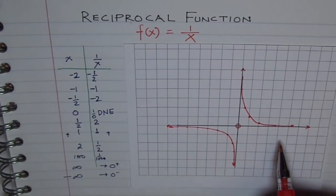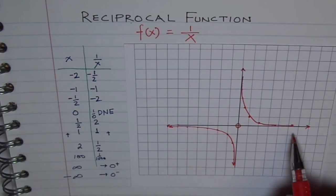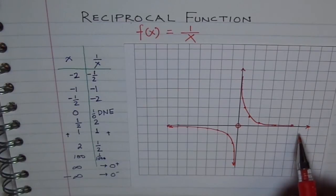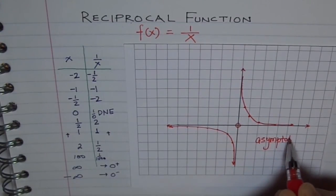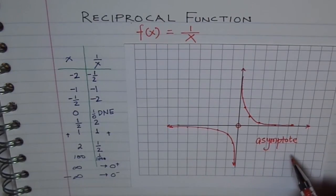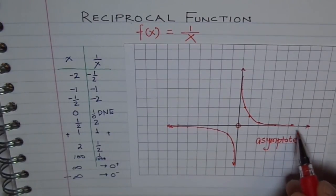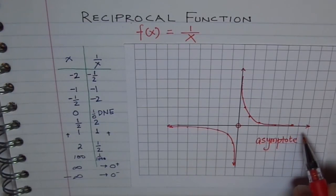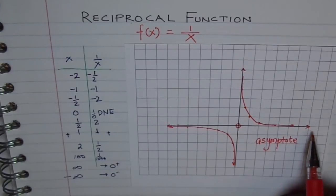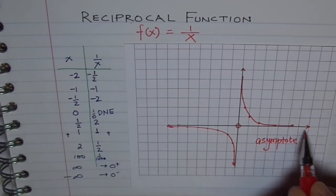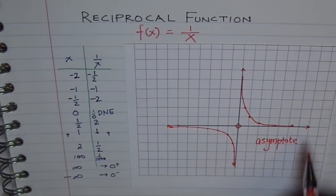Now here, we have used the concept that as x approaches a value, the function approaches 0. This is a basic definition, and now I will introduce you to the word asymptote. An asymptote is a line that a graph of a function gets closer and closer to but never meets. We are approaching the line y equals 0, the x-axis, which is a horizontal line.